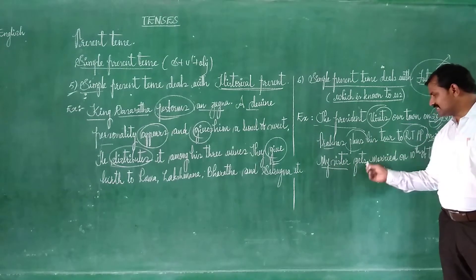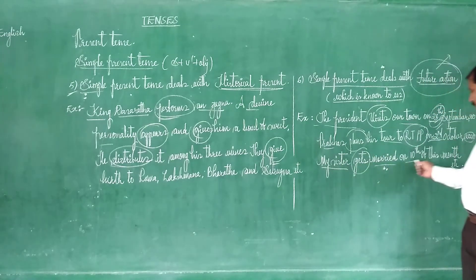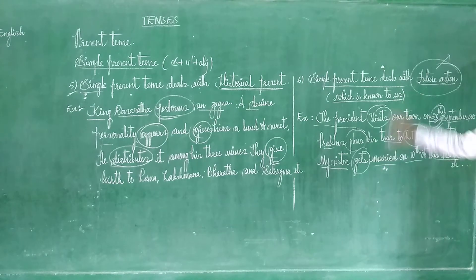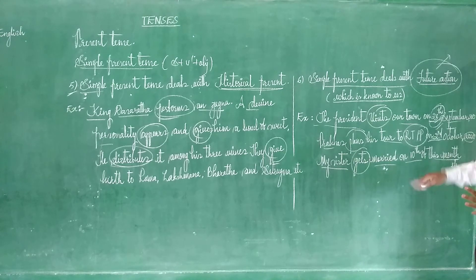And coming to the last example, my sister gets married on 10th of this month. For example, so this is also known to us very clearly. All the examples given are fixed programs. So anything that is happening in the future that is known to us now, you can write that one in the simple present tense.